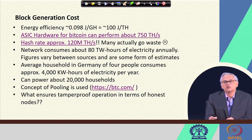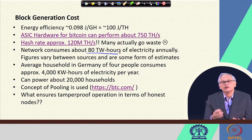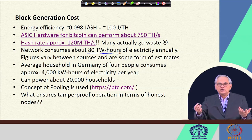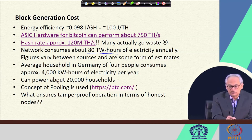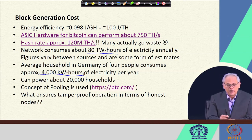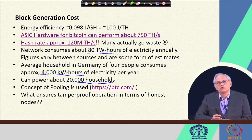This Bitcoin network consumes a huge amount of electricity annually. Some typical figures: the average household in Germany of 4 people consumes about 4,000 kilowatt-hours of electricity per year. The amount of energy being spent in this network can power up to around 20,000 households. This is a huge amount of energy being spent.